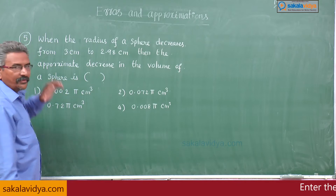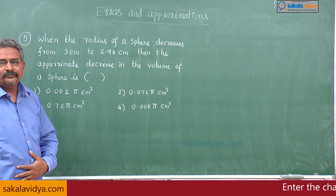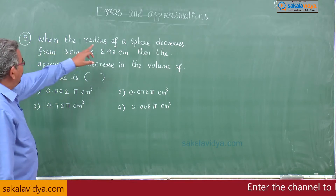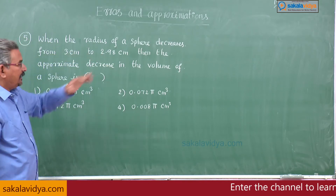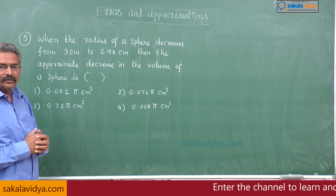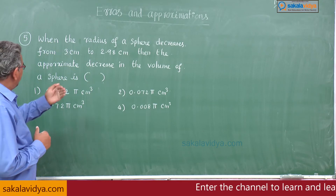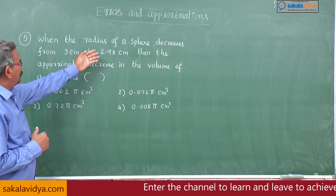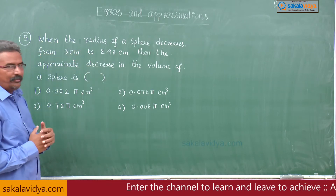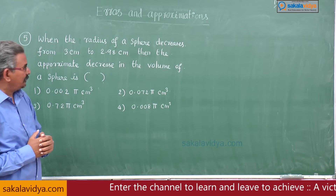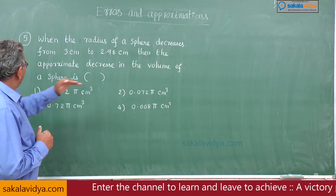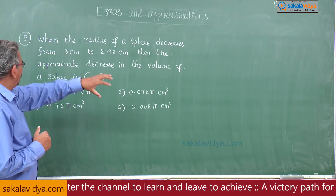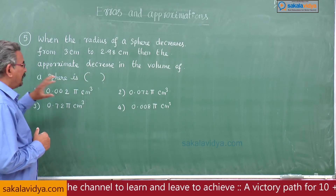Let us come to the fifth problem. When the radius of a sphere decreases from 3 centimeters to 2.98 centimeters, then the approximate decrease in the volume of a sphere is?